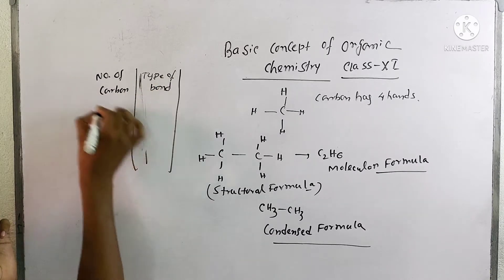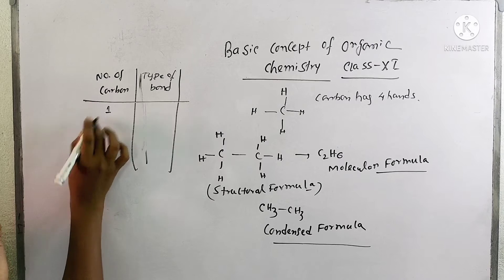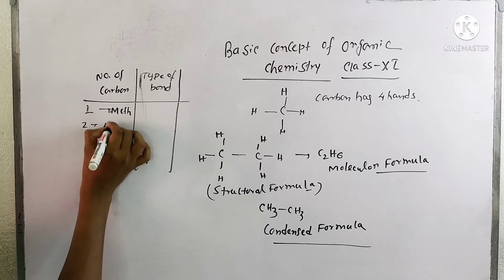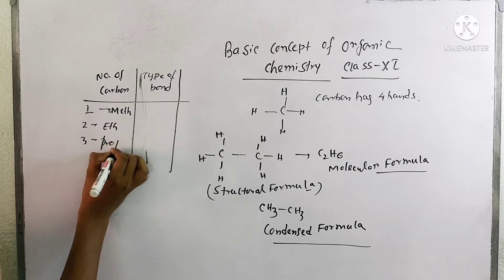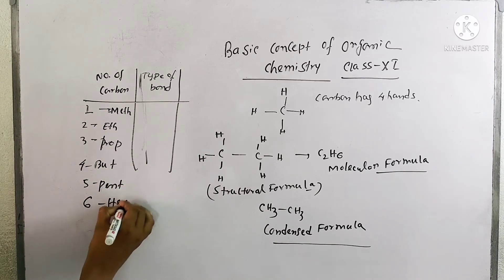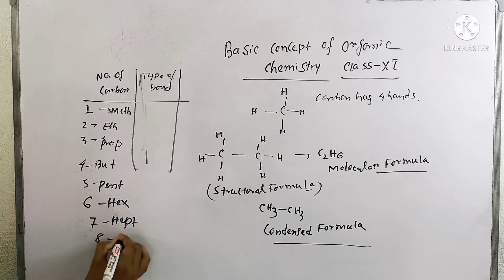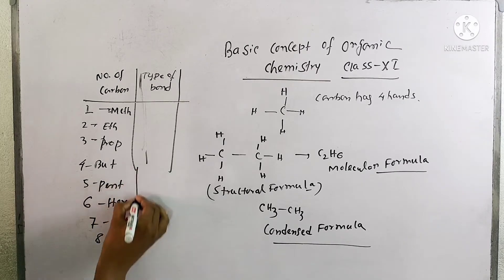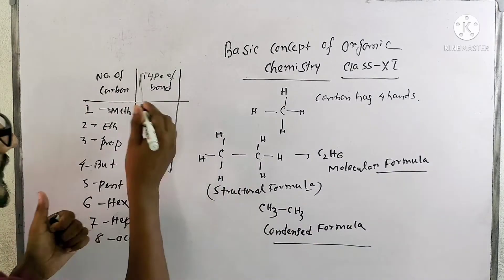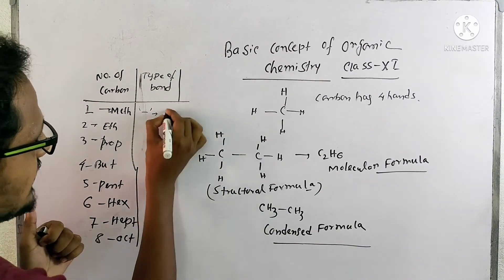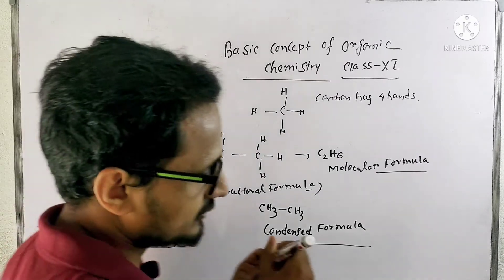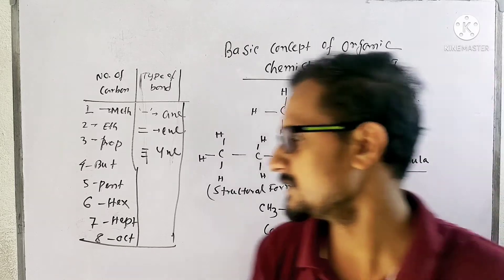If the number of carbon is 1, the name will start with meth-. If it is 2, eth-. If 3, prop-. If 4, but-. If 5, pent-. If 6, hex-. If 7, hept-. If 8, oct-. If 9, non-. If 10, dec-. If 11, undec-. And for the bond type: if single bond, it ends with -ane; double bond, -ene; and triple bond, -yne. This is the basic thing we need to know to write the name of a compound.